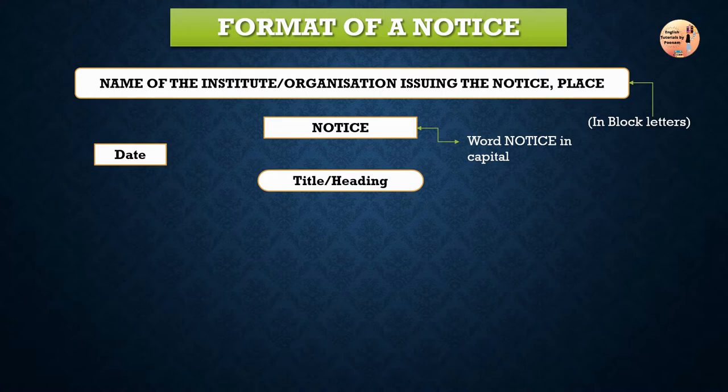After the date, we write a heading or caption in the middle. The heading should be eye-catching and indicate the purpose for which it has been written — like calling a meeting, drawing attention, making an appeal, or informing the general public. Just by looking at the heading, the reader should know what the notice is about, so that more people read it. This makes our motive of writing the notice successful.